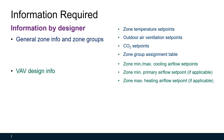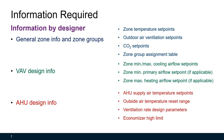You also need some VAV design information such as zone minimum and maximum cooling airflow set points, zone minimum primary airflow set points, and zone maximum heating airflow set points if applicable. For air handling unit design, you need AHU supply air temperature set points, outside air temperature reset range, ventilation rate design parameters, and economizer high limits.